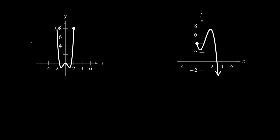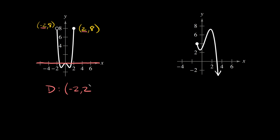Now let's go through the last few examples quickly. The first has a W-shaped function with an open circle at negative 2, positive 8 and a closed circle at positive 2, positive 8. For the domain, we look at the x-axis side to side: the furthest left is x equals negative 2 and the furthest right is x equals positive 2, so it goes from negative 2 to positive 2. We have an open circle at negative 2, so parenthesis, and a closed circle at positive 2, so bracket.